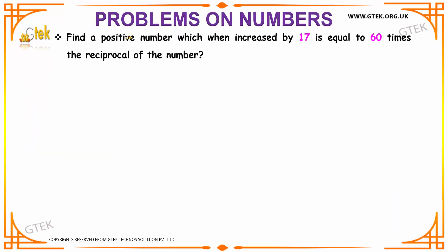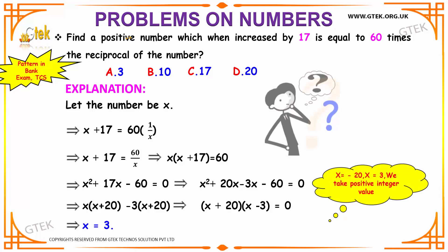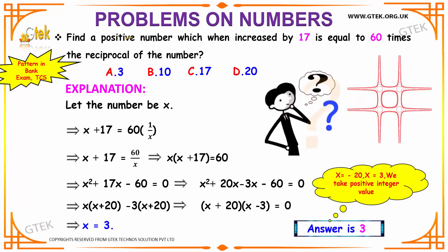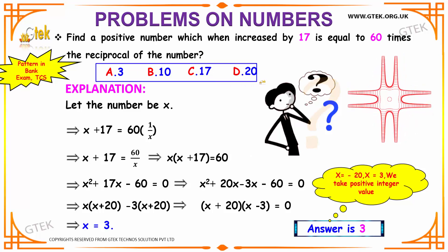Moving on, we have our first interesting example which says that we have a positive number which when increased by 17 will be equal to 60 times the reciprocal of the number. We have our options as a) 3, b) 10, c) 17, and d) 20.